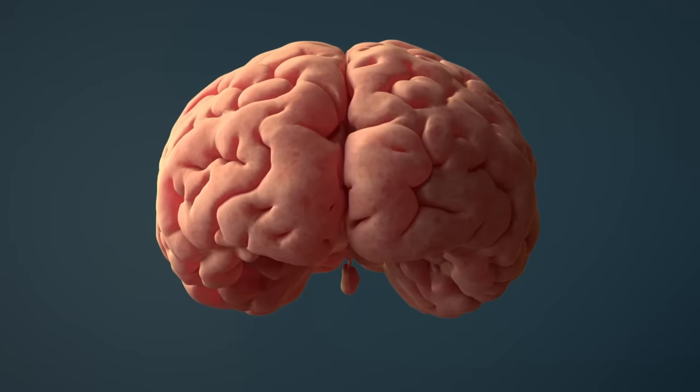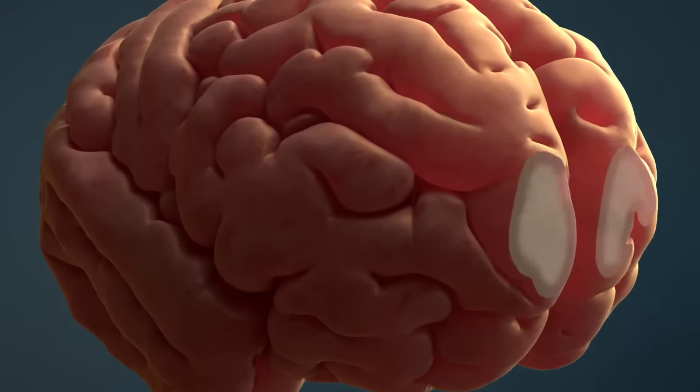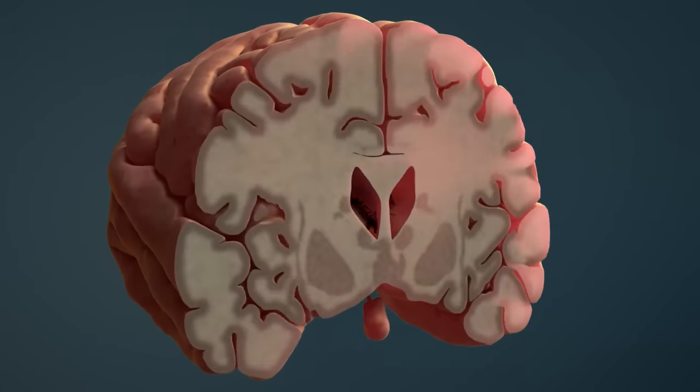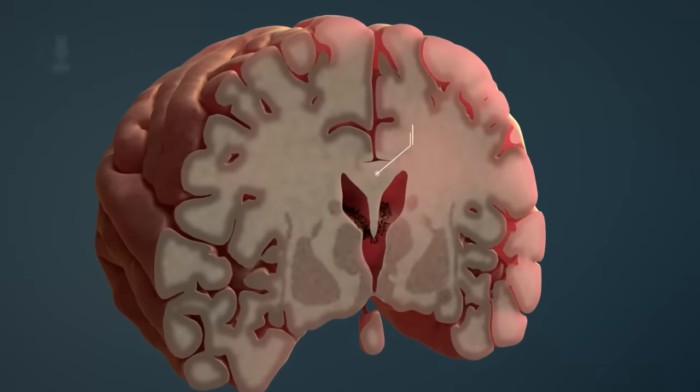The brain has nerve fibers that run from one side to the other, so that both hemispheres of the brain can communicate with each other. The entirety of these nerve fibers is called corpus callosum.